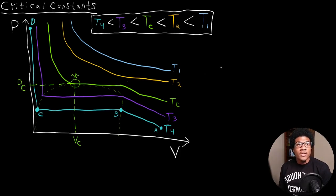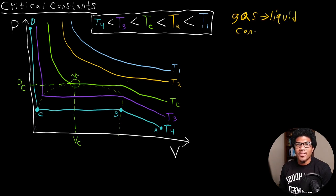In this video, we're going to discuss critical constants. Now, these critical constants are associated with a particular phase change for gas, specifically the gas to liquid phase change. So going from gas to liquid, known as condensation.